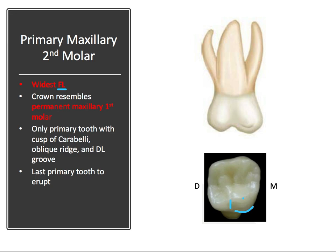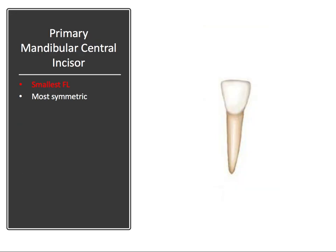That's enough about the maxillary primary dentition — let's go to the lower. The primary mandibular central incisor is the smallest tooth in the faciolingual direction, and like in the permanent dentition, it's also the most symmetric of all the teeth. Mesial is on the right and distal is on the left.